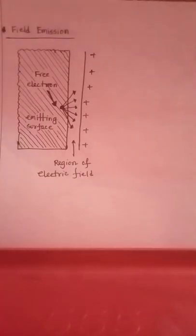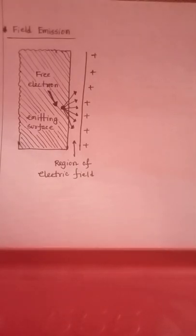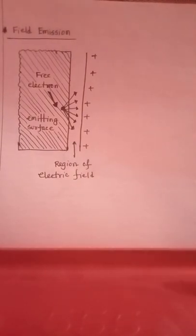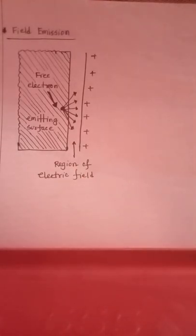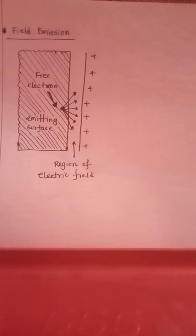The free electrons will be emitted when a very intense electric field is applied. Usually a voltage in the order of millions of volts per centimeter distance between the emitting surface and the positive conductor is necessary to cause field emission. Field emission can be obtained at temperatures much lower than required for thermionic emission, and therefore it is also sometimes called cold cathode emission or auto-electronic emission.